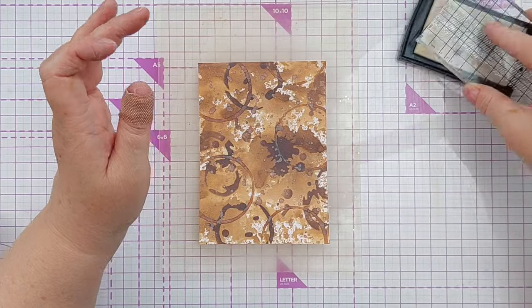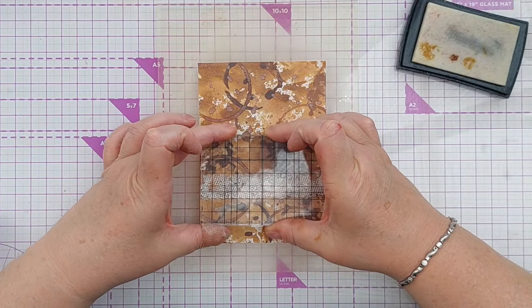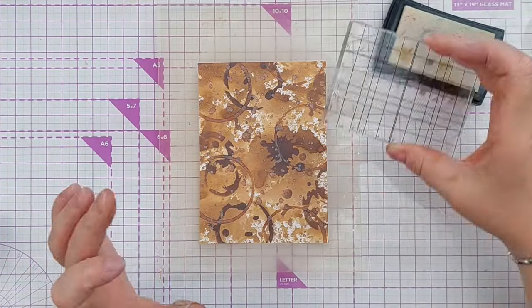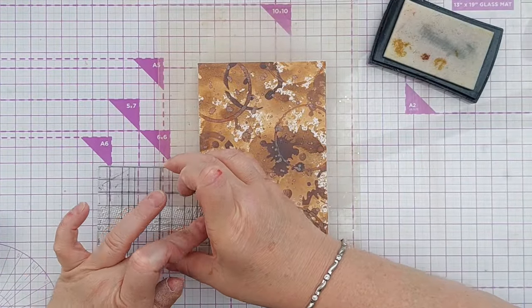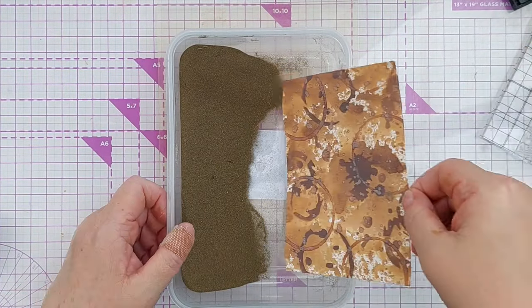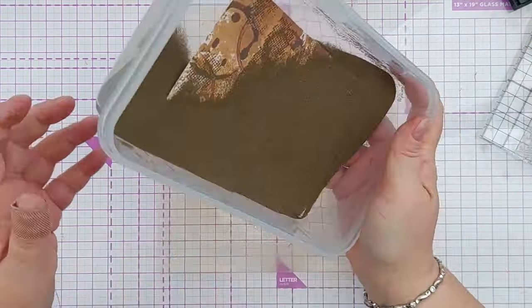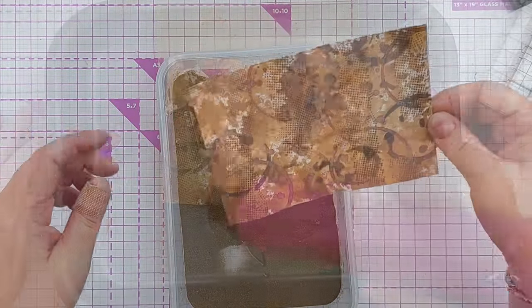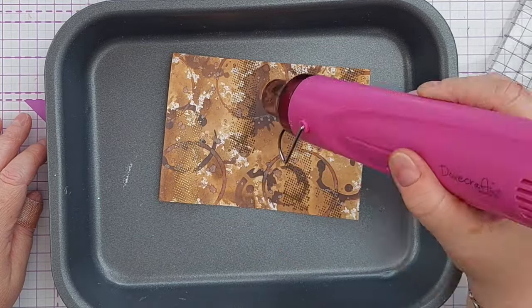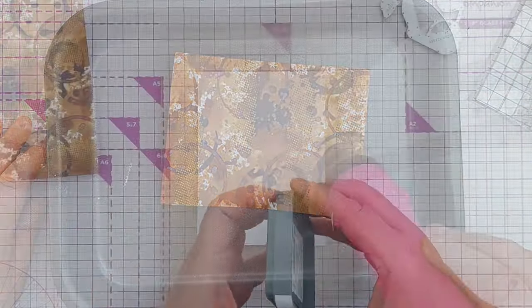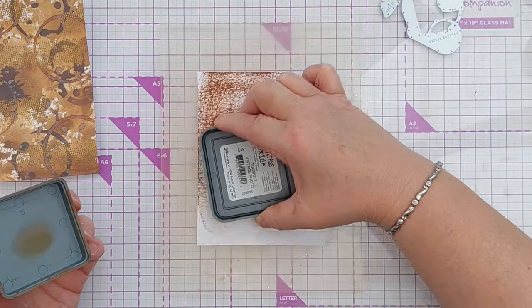For my heat embossing, I decided to use a grungy, spotty, blotchy stamp that came in a mixed media effects type stamp set. I stamped that on, again, all over, getting it nicely distributed. And I stamped it in embossing ink and then dipped it in my gold embossing powder and heated it with my heat tool. So now I've got lots of lovely gold dotty bits all over my coffee stained paper.